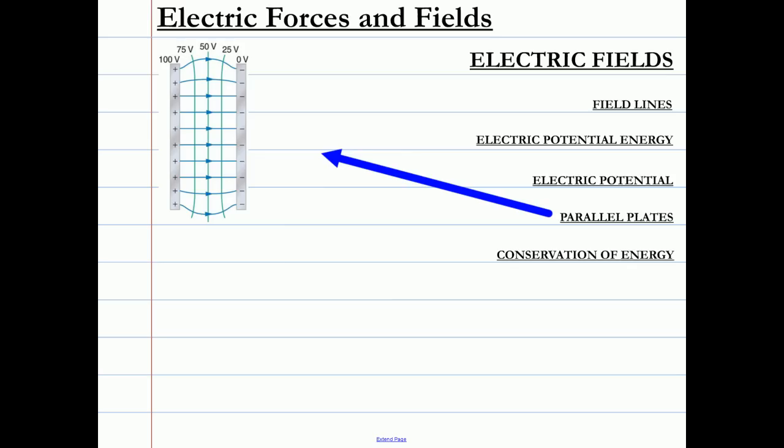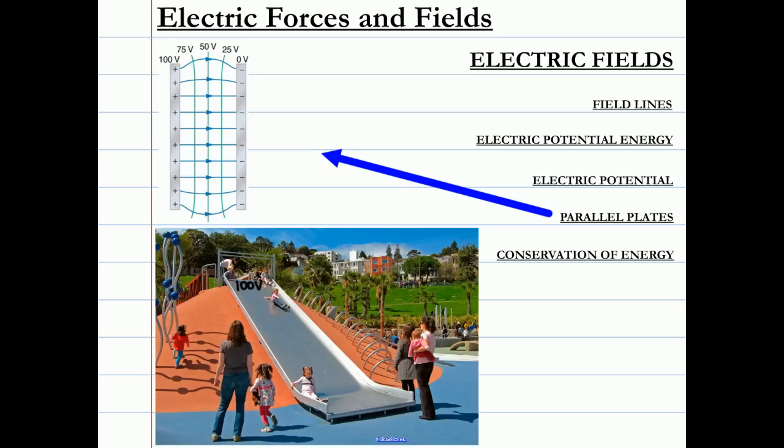Parallel plate capacitors have a very consistent electric field in between them. Near their outer edges it gets a bit wonky, but we won't have to worry about that in this course. We're given this relationship between electric field and electric potential on your formula sheet. This one applies to parallel plates where D is the plate separation. We can think of the electric potential between parallel plates as a nice wide gradual slide, where the top of the slide is the positive plate and the bottom of the slide is the negative plate.